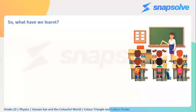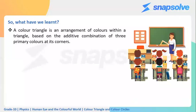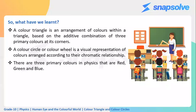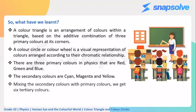So what have we learned? A color triangle is an arrangement of colors within a triangle based on the additive combination of three primary colors at its corners. A color circle is a visual representation of colors according to their chromatic relationship. In physics, the three primary colors are red, green, and blue. The secondary colors are cyan, magenta, and yellow. When we mix secondary colors with primary colors, we get tertiary colors, and there are six tertiary colors in physics.